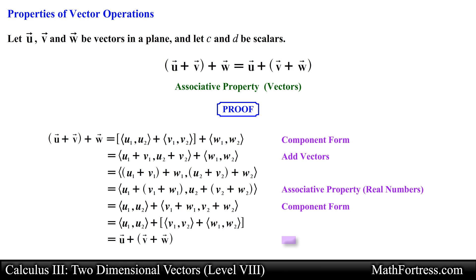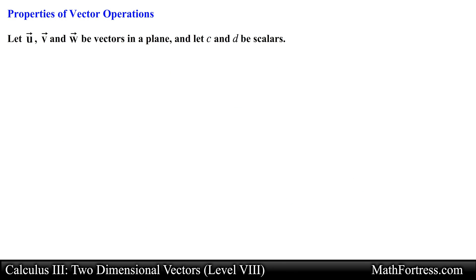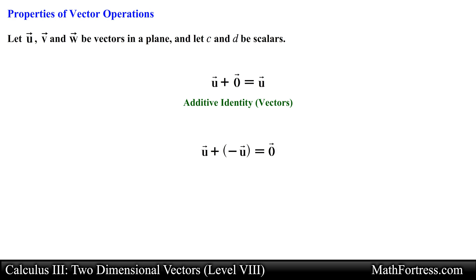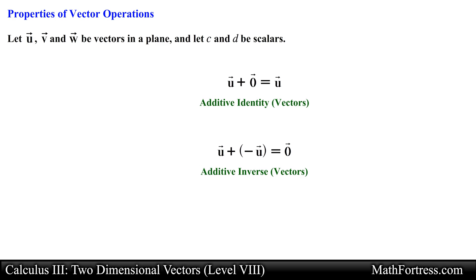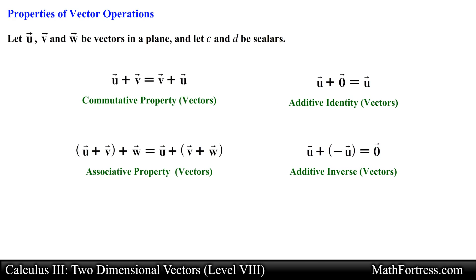The rest of the vector properties can be proven in a similar fashion. Many of the vector properties will depend on similar properties of real numbers to carry out the proof. Vector u plus the zero vector is equal to vector u — this is known as the additive identity property for vectors, which resembles the additive identity property for real numbers. Our next property is vector u plus the negative of vector u is equal to the zero vector, known as the additive inverse property for vectors. Notice that these four properties involve only vectors.